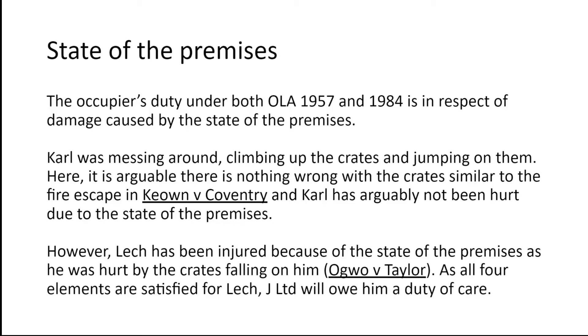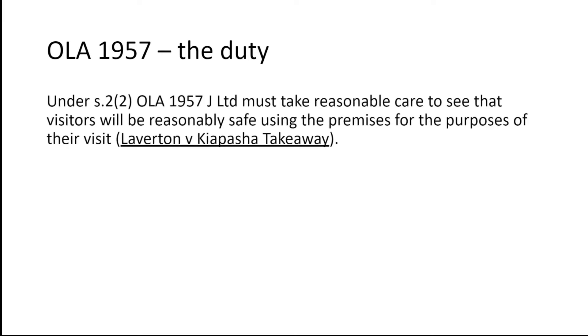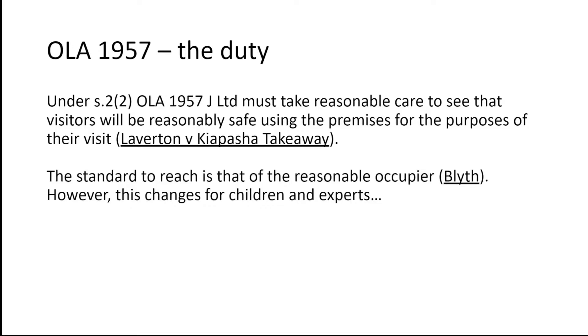As all four elements will be satisfied for Lek, J Limited will owe him a duty of care. Once you've dealt with the first four common elements, focus on either the 1957 or 1984 Act. Dealing with the 1957 Act and Lek first: under Section 2.2, the duty has two 'reasonables' — the occupier must take reasonable care to see that the visitor will be reasonably safe using the premises for the purposes of their visit, per Laverton v Kiapasha Takeaway. The standard J Limited must reach is that of a reasonable occupier, but this changes if you have children or experts in the scenario.